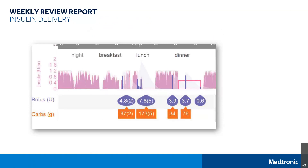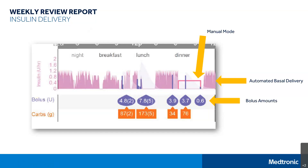Insulin delivery on the Weekly Review Report shows any autobasal that is occurring, as seen on the graph in pink. The pink straight line on the far right near dinner represents that this person was in manual mode, which uses a previously programmed basal rate. On the bottom in purple, we can see the bolus amount in units, along with the carbohydrate gram amount entered in orange. The number in brackets represents the number of boluses that occurred within three hours. This information helps you understand the autobasal regulation and when it is occurring, and also helps identify how boluses from food and corrections impact your numbers.